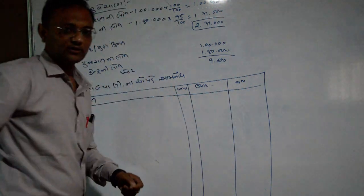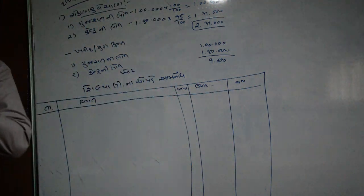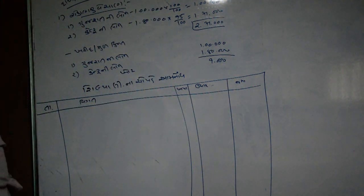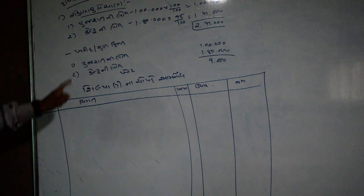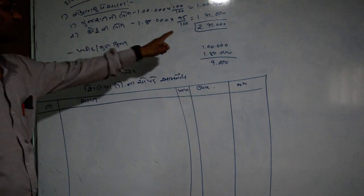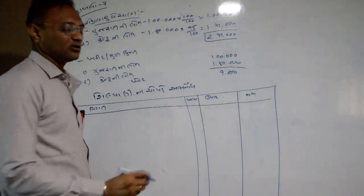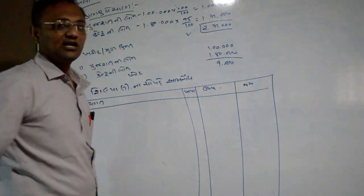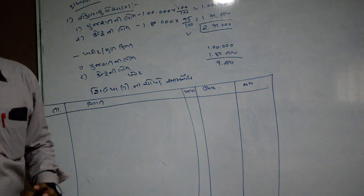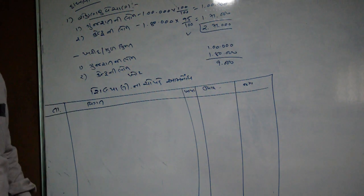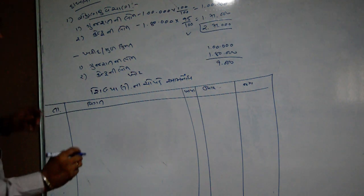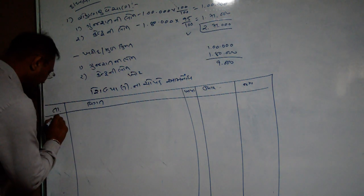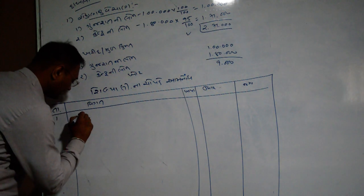I am going to take one-by-one entry. So first entry is going to be one-by-one, so you can take one-by-one entry.